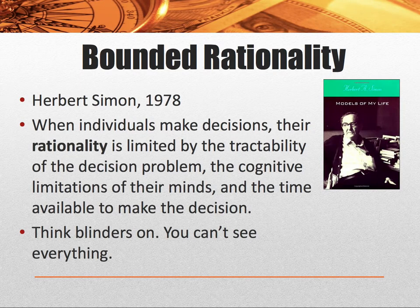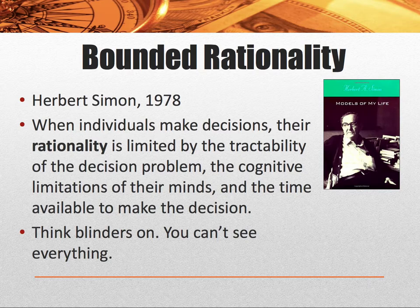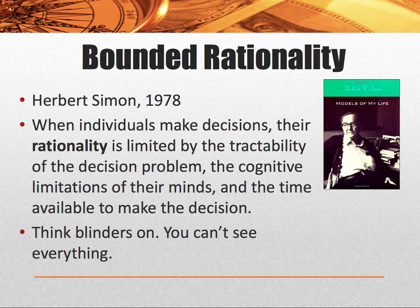The first one is bounded rationality. This was coined by Herbert Simon in 1978. He wrote a book called Models of My Life, which has a lot of models in it. This course has quite a bit of models that you want to internalize to be able to make good decisions.